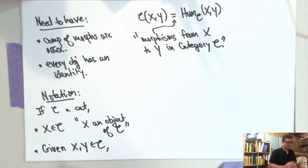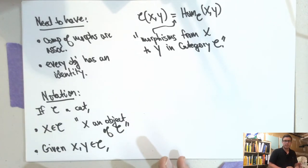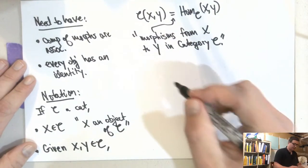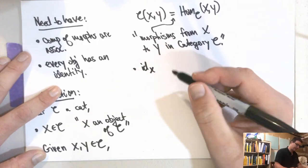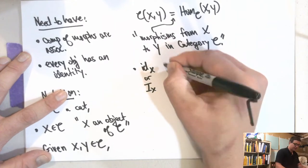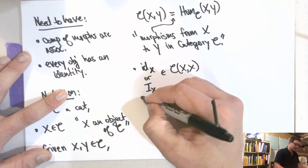There's a distinguished element: the identity morphism of X, written I_X or id_X, which lives in C(X, X). These are the axioms, and this is some notation for Hom sets. So now let me say a couple more things and talk about functors.